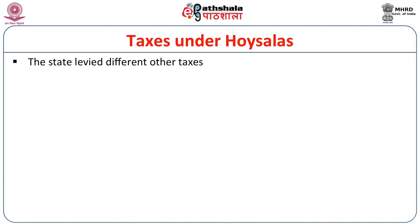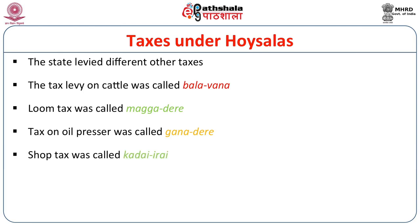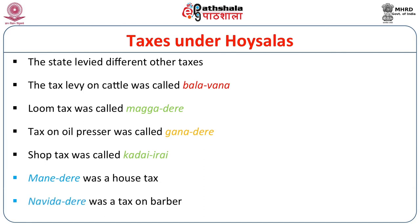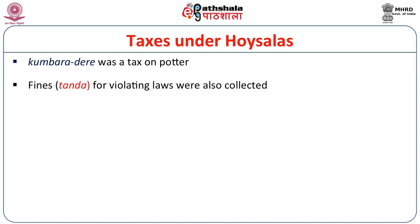The state levied various other taxes. Tax on cattle was called balavana. Loom tax was called meccathera. Tax on oil pressers was called ganadera. Salt tax was called kadai idai. House tax was called manai tera. Tax on barbers was called navitha tera. Tax on potters was called kumbara teva. Fines were also collected from defaulters during punishment.